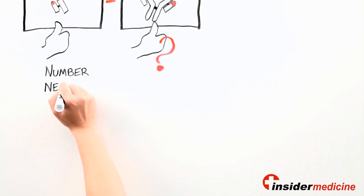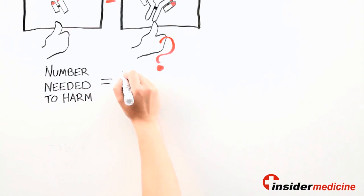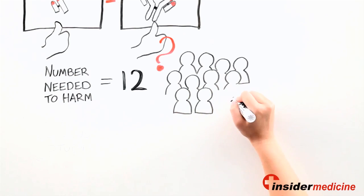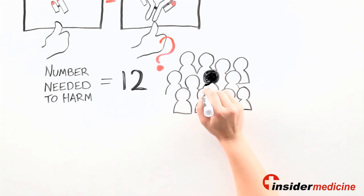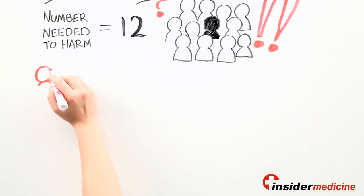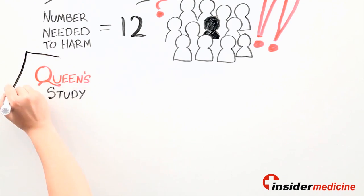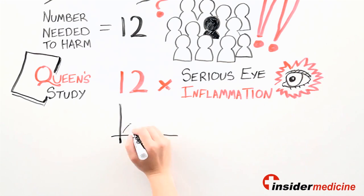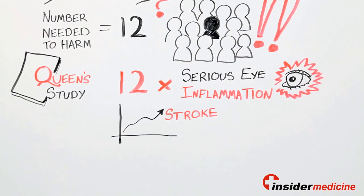The study showed a number needed to harm of 12 in favor of Lucentis. What this means is that for every 12 patients treated with Avastin instead of Lucentis, one would develop a bad systemic outcome. And that's a pretty scary number. Here at Queen's University, we studied more than 1,500 of our patients who received either drug. We found that patients who got an eye injection with Avastin were 12 times more likely to develop serious inflammation in the eye. We also noticed a trend towards the possibility of patients developing a stroke within 30 days of getting an eye injection with Avastin.